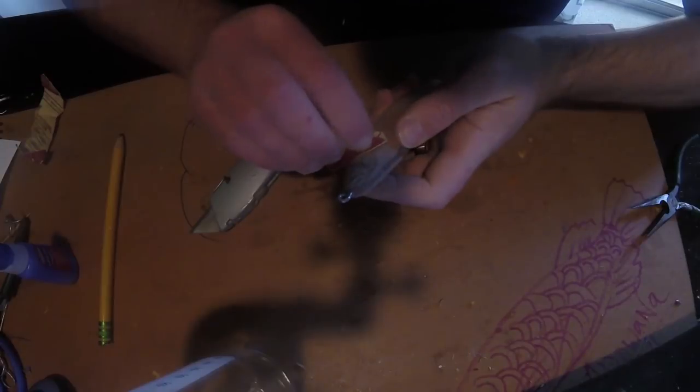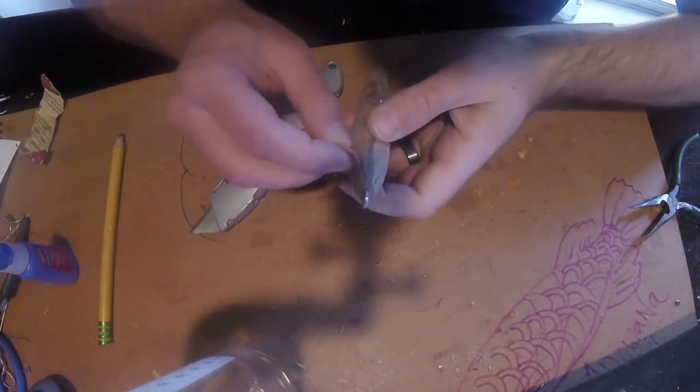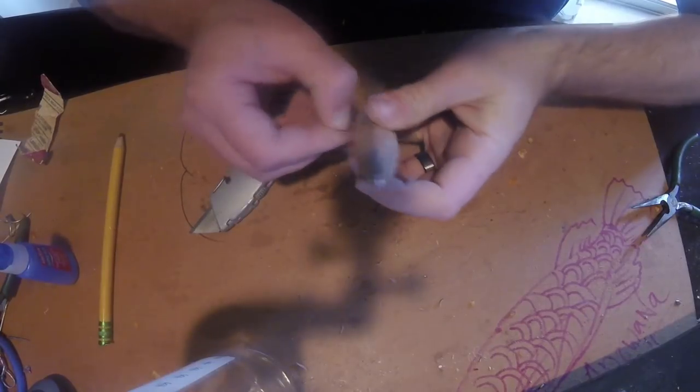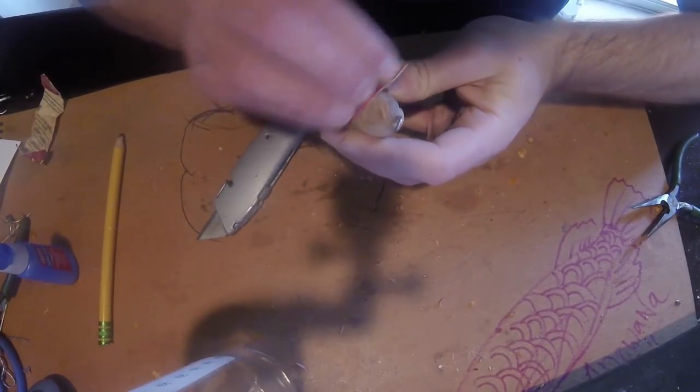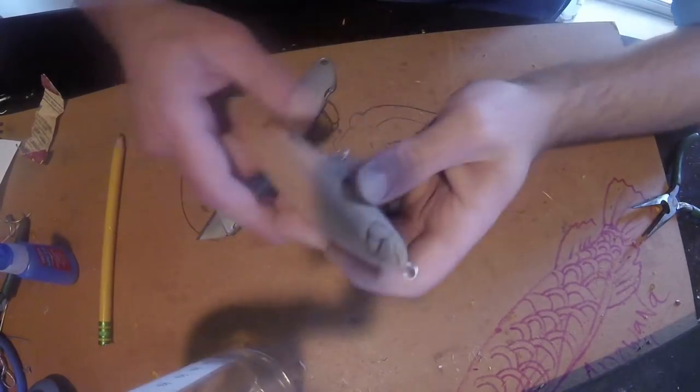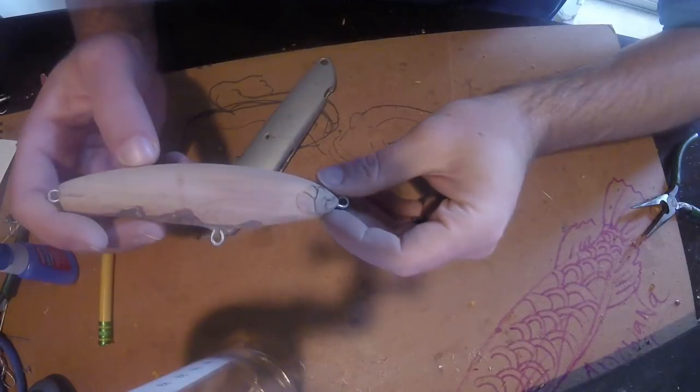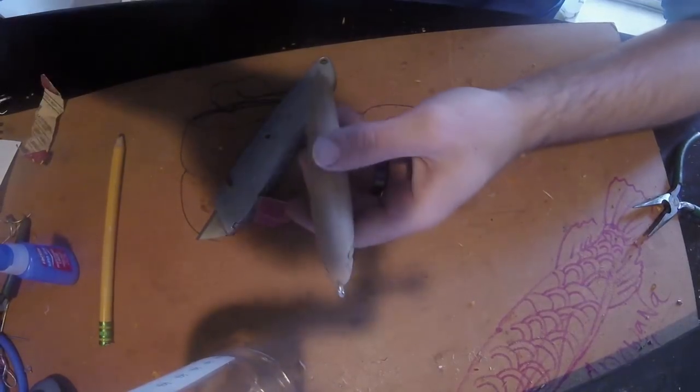So here we're doing the sanding. This is 320 grit sandpaper. Very fine. You want to make sure everything is nice and smooth for the foiling. Any bumps that you have in the wood or uneven surfaces are going to stick out when you foil it. So take your time to make sure everything is smoothed out properly.